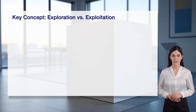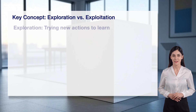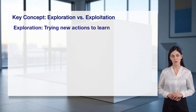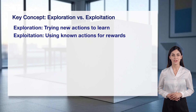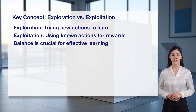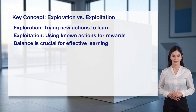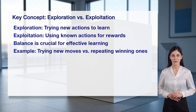A fundamental concept in reinforcement learning is exploration versus exploitation. Exploration means trying new actions to learn what works, even if it's risky. Exploitation involves using known actions that have previously led to rewards. Balancing exploration and exploitation is crucial for effective learning, as too much of either can limit progress. For example, an agent might try new moves in a game or repeat ones that led to wins, finding the right mix.